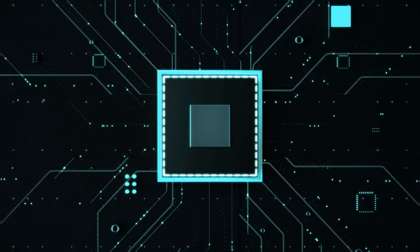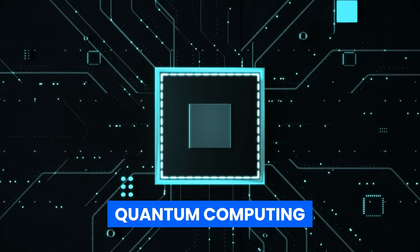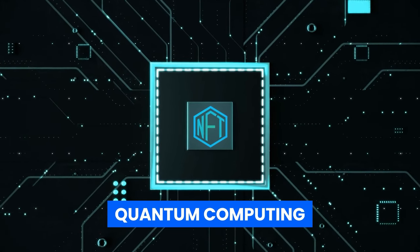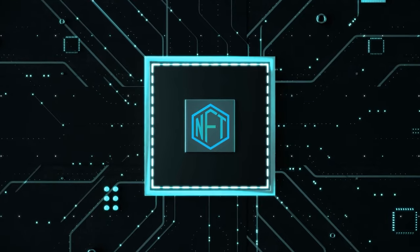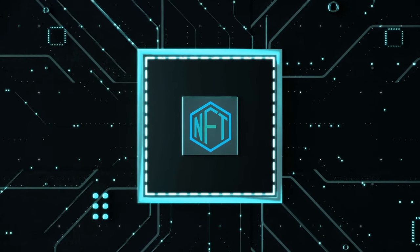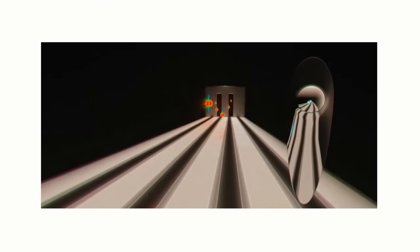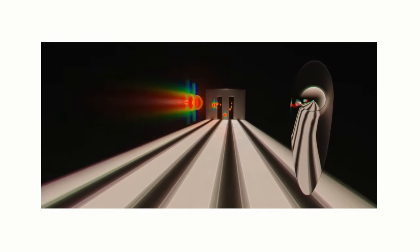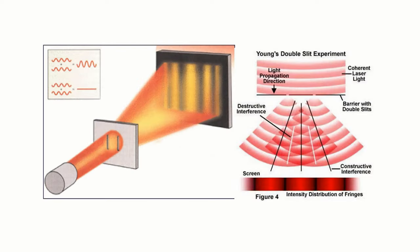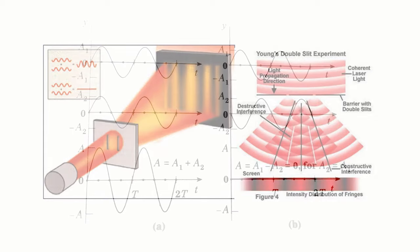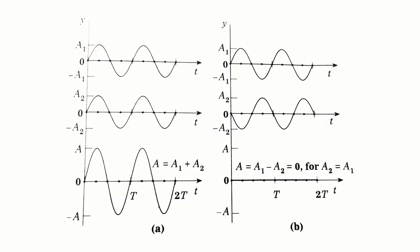The concept of superposition has important applications in quantum computing, where information is stored and processed in qubits that exist in a superposition of states. Young's double-slit experiment is a seminal experiment in the history of science, as it provided one of the earliest pieces of evidence for the wave nature of light and the principle of superposition.